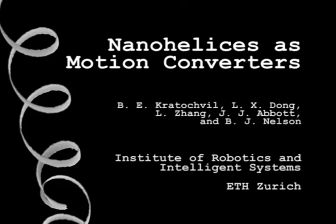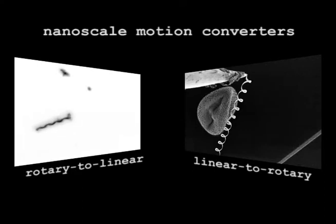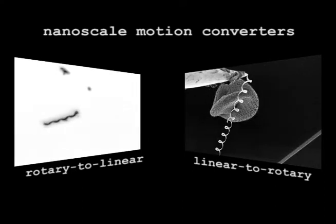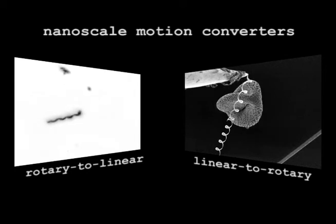Few rotational actuators currently exist with the ability to transmit motion at different speeds, torques and directions at the nanometer scale. Nanohelices have great possibilities for use as such a nanoscale motion converter.